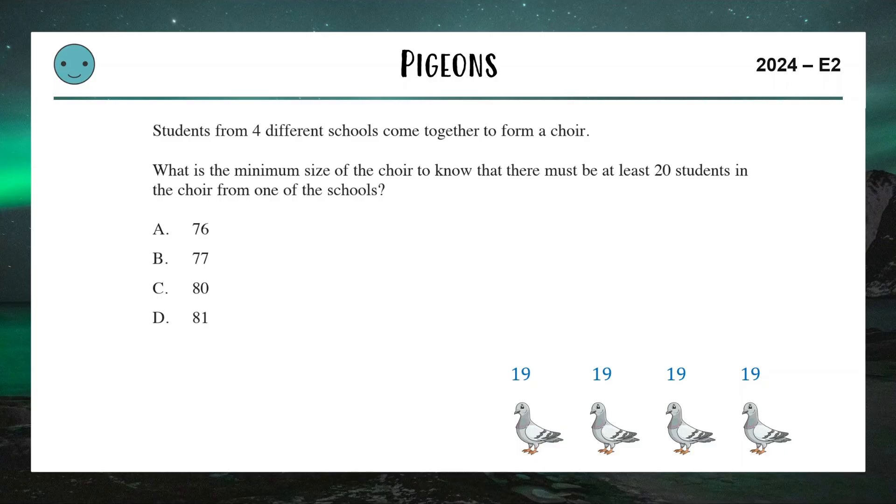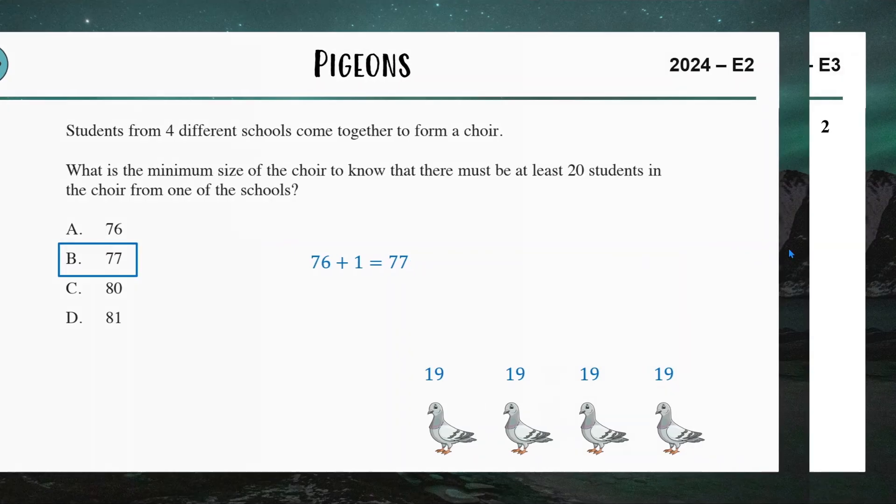Now when I pick the next one, which brings us up to 77, the 77th student has to go into one of these four categories and put us over to 20, which tells me that the answer to this one is 77. If I have 77 people divided amongst four categories, there will be at least 20 students in one of the four categories.